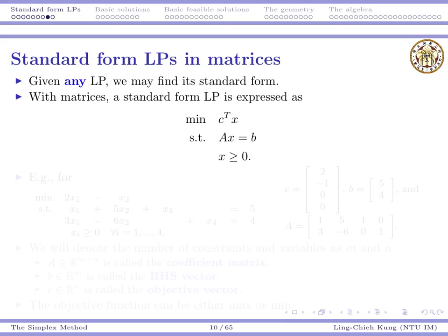Now we know that given any linear program we can find its standard form. We also need to introduce the matrix format of a standard form, since that will be required to develop some theory in the future. In general, a standard form LP can be expressed compactly as: minimize c^T x, subject to Ax = b, and x ≥ 0. Here c is a vector of objective coefficients, A is the constraint coefficient matrix, and b is the right-hand side vector.